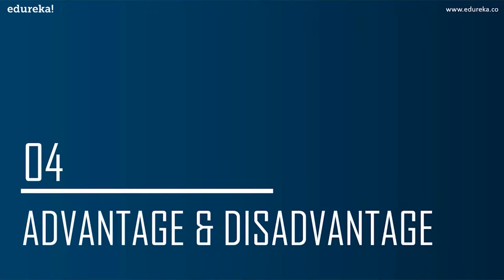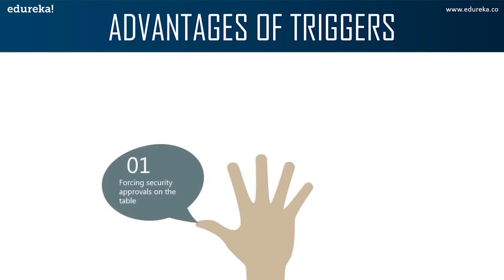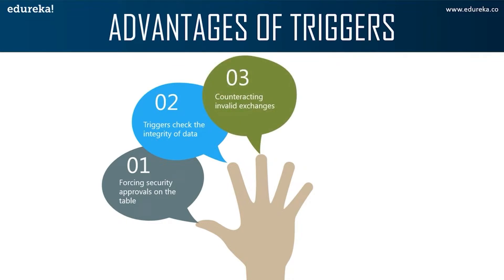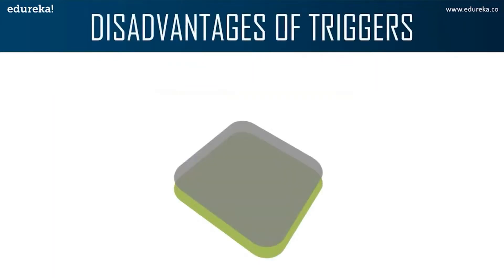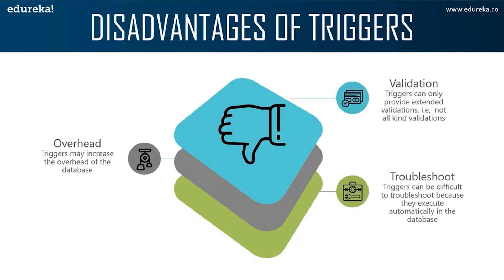Let's move to the next topic: advantages and disadvantages. The advantages of triggers are: first, they enforce security approvals on tables in the database. Second, triggers provide another way to check the integrity of data. Third, triggers counteract invalid transactions. Fourth, triggers handle errors from the database layer. Fifth, triggers are useful for inspecting data changes in the table. The disadvantages are: triggers can only provide extended validation — not all kinds of validations — and you cannot use NOT NULL, UNIQUE, CHECK, or FOREIGN KEY constraints in a trigger. Next, triggers may increase the overhead of a database. Finally, triggers can be difficult to troubleshoot because they execute automatically in the database and may not be visible to client applications.